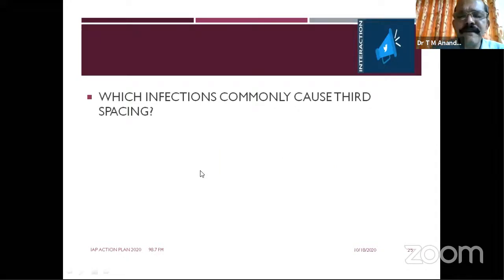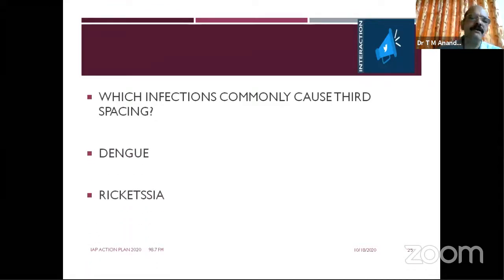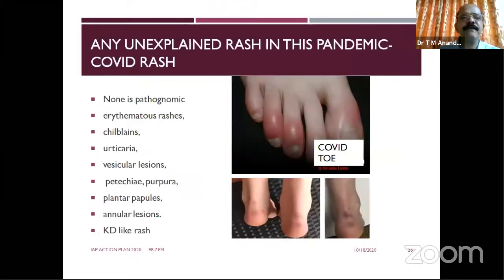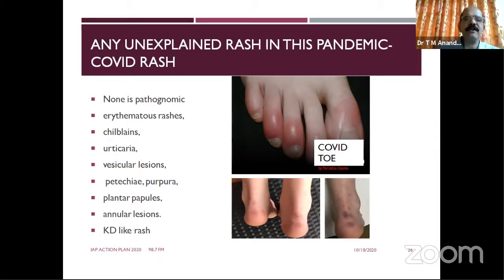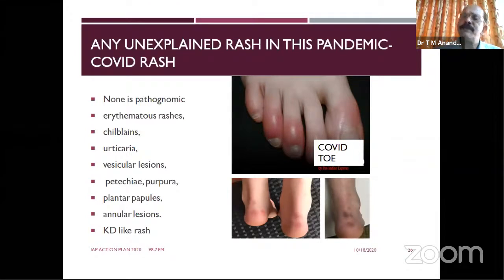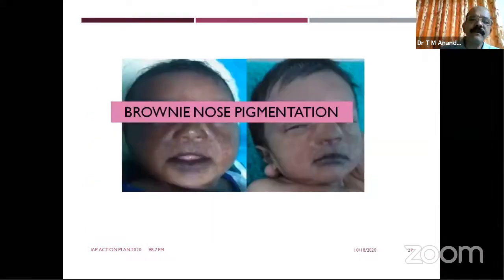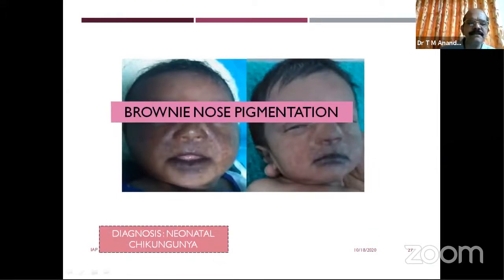In certain serious conditions caused by infections and third spacing — dengue and rickettsial infection — things may go very serious. Regarding COVID and skin: in COVID you will get 8–18% with skin involvement, but luckily there is no characteristic skin feature in COVID. Any type of rash may appear. Chikungunya rash may appear brownish; in neonates with chikungunya, our experience is not very extensive. Nowadays hand, foot and mouth disease is very commonly seen.